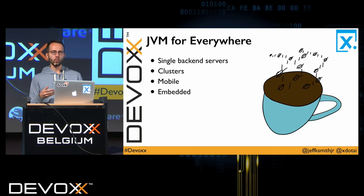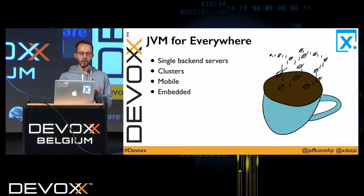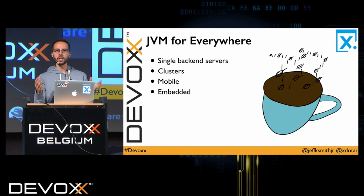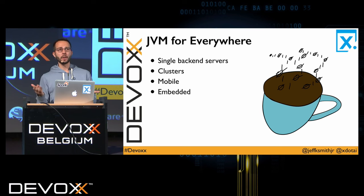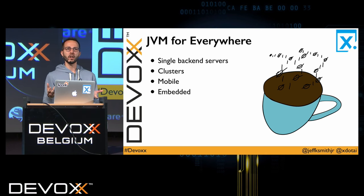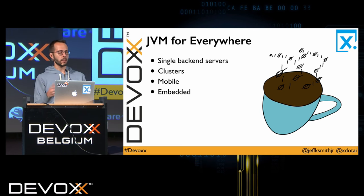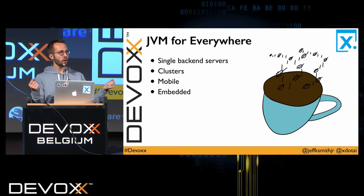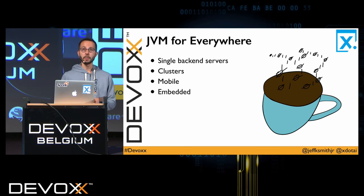I really like that we can use the JVM kind of everywhere now, even beyond the original focus on single back-end servers. I spend most of my life reasoning about large-scale clusters — you can see in projects like Spark, Hadoop, Mesos, and Marathon all sorts of large-scale cluster technologies that work very well within the JVM. And we're also seeing expansion of the JVM to mobile and embedded contexts, which is really exciting for people who want to build artificial intelligence systems.